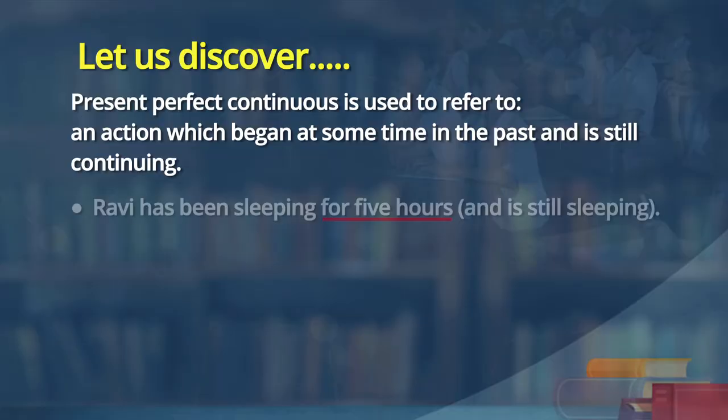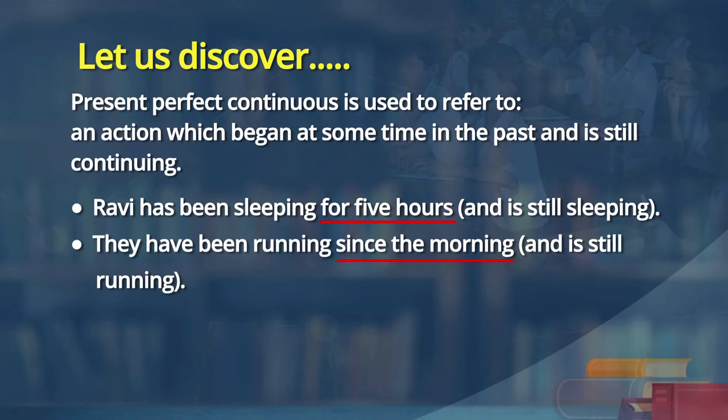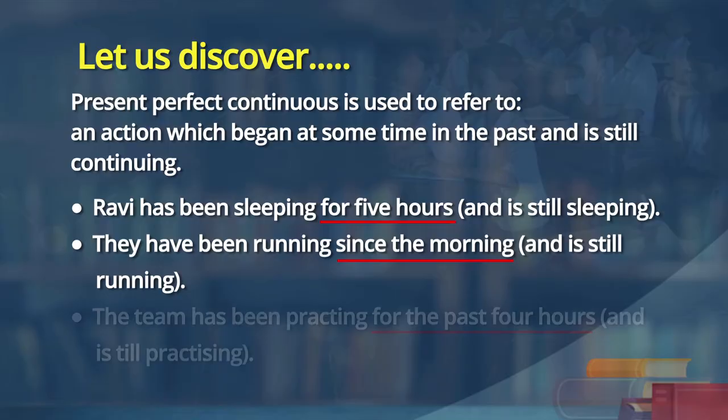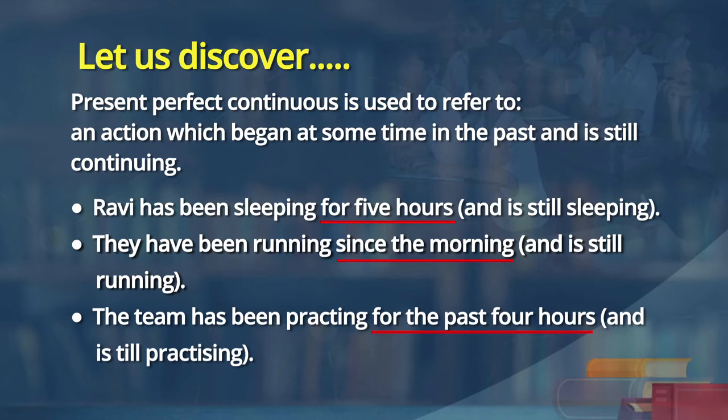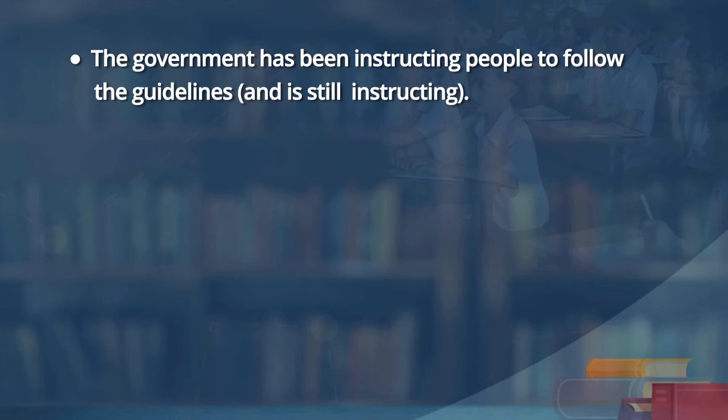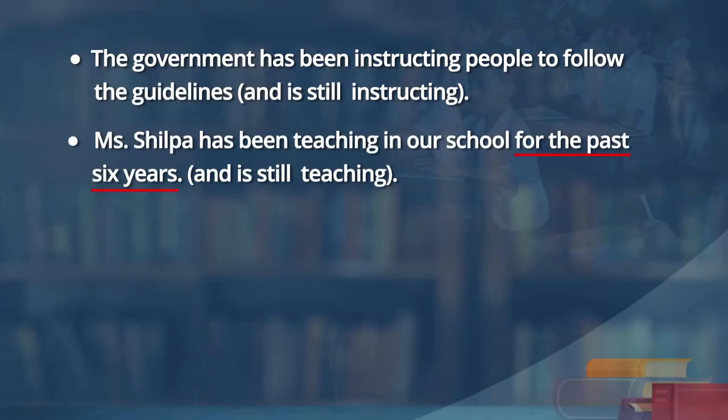Let us go back to the sentences and notice something important. 'Ravi has been sleeping for 5 hours' — underline 'for 5 hours.' 'They have been running since the morning' — look at the adverb 'since.' 'The team has been practicing for the past 4 hours.' 'The government has been instructing people to follow the guidelines for some time.' 'Ms. Shilpa has been teaching in our school for the past 6 years.' Key words: 'since,' 'for the past,' 'for three hours.'